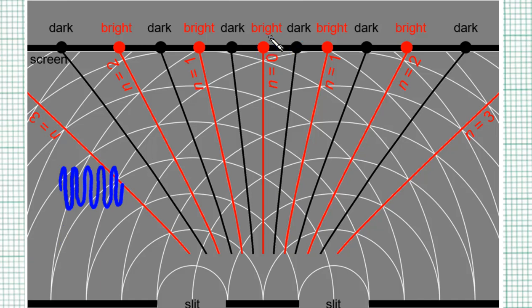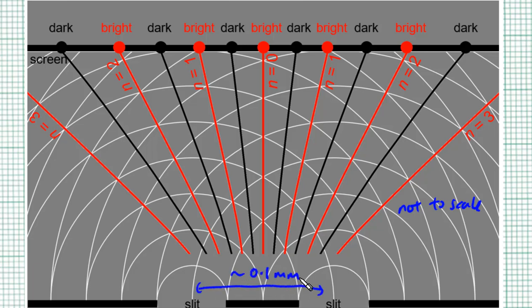Okay, the third key difference is the dimensions. This diagram is not drawn to scale. The distance between the double slit is typically about 0.1 mm. And typically, you will not place a screen like 0.1 mm away from the slit.